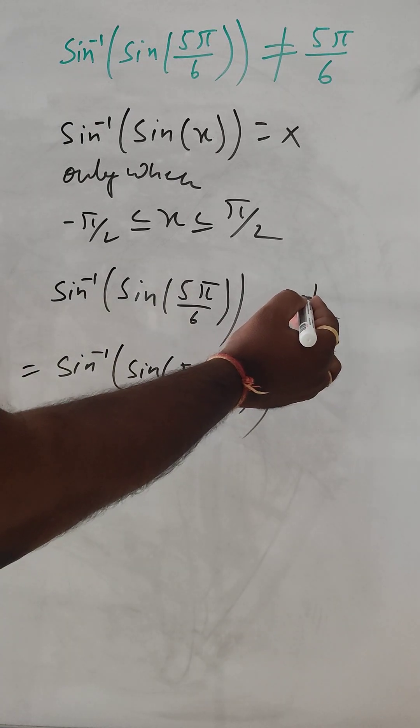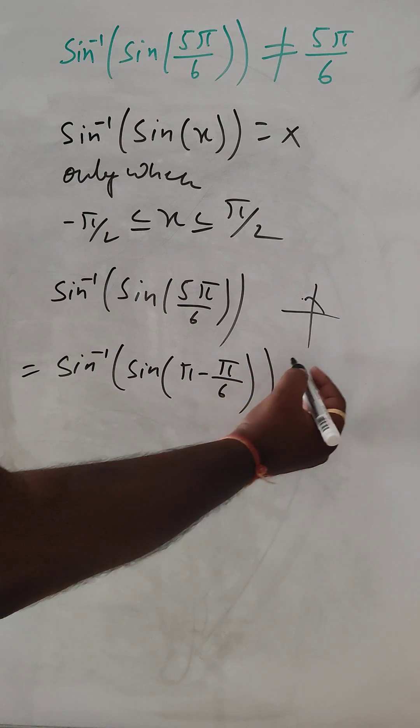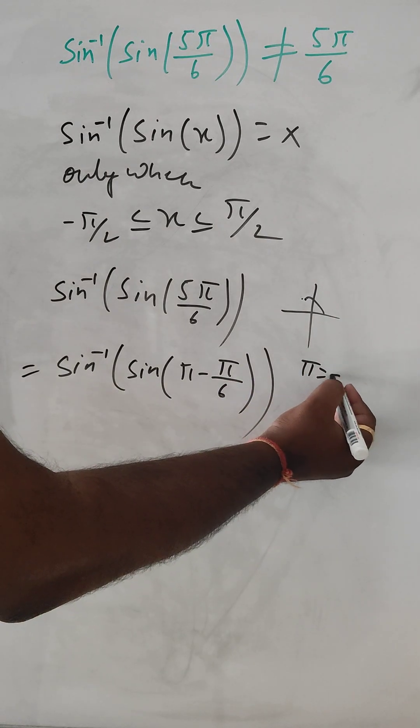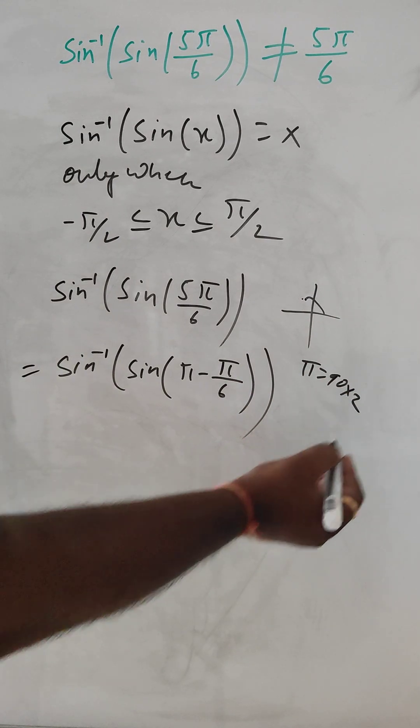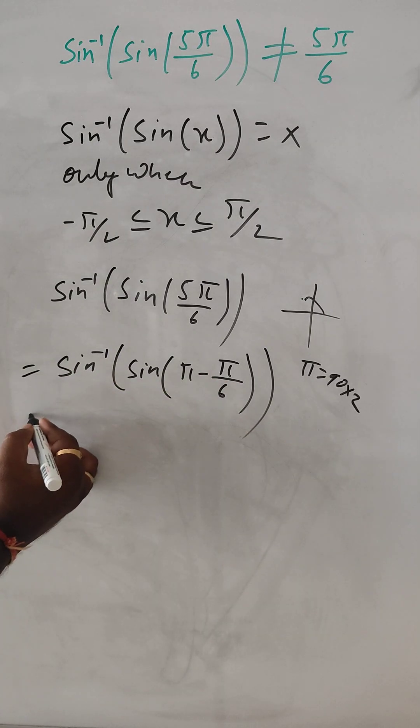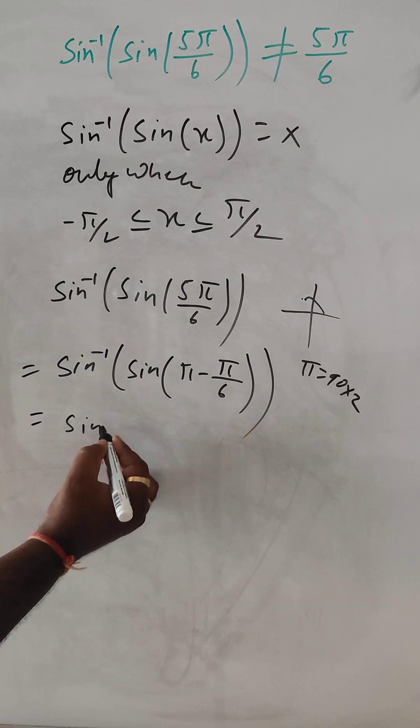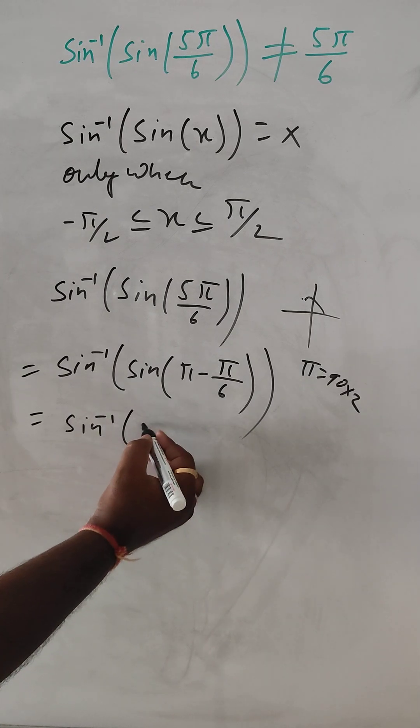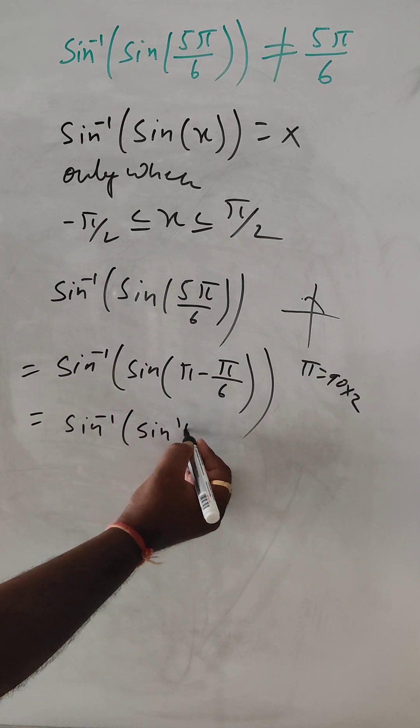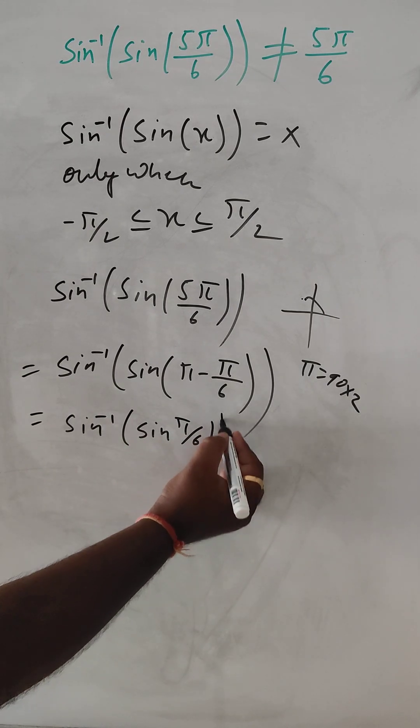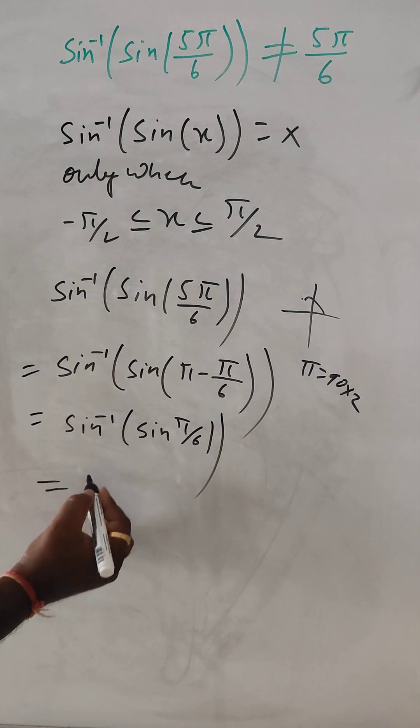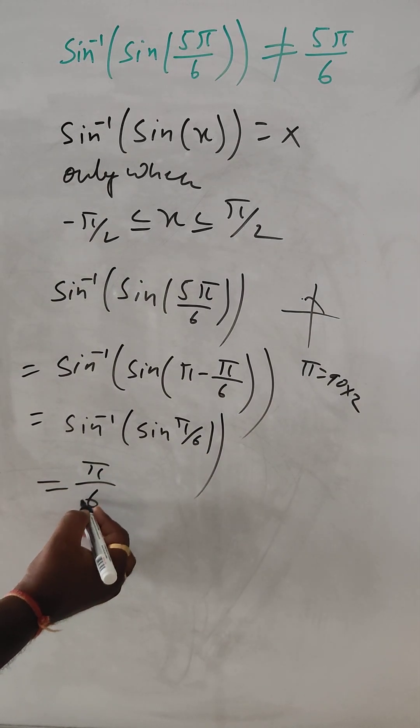In the second quadrant, sin is positive, and π is an even multiple of 90, so there is no change. Then it will be sin π by 6, so the value is π by 6.